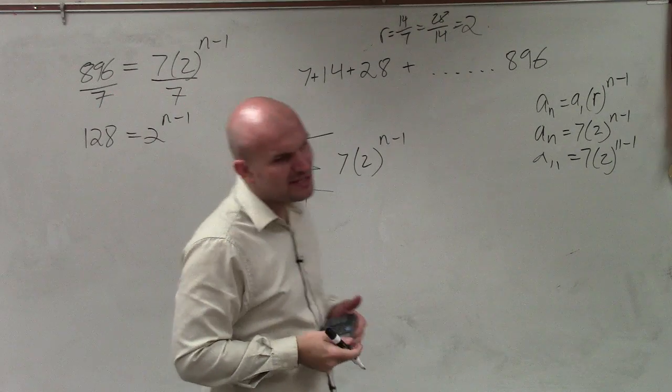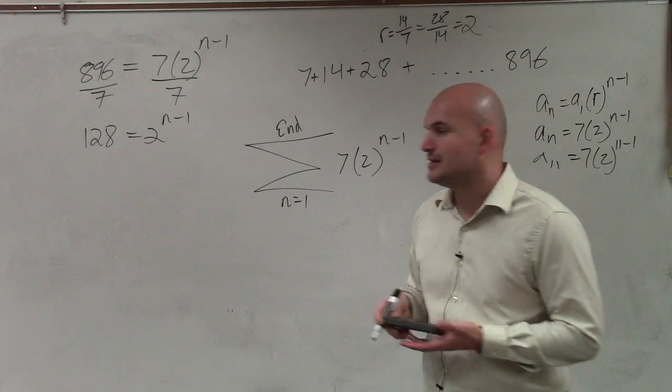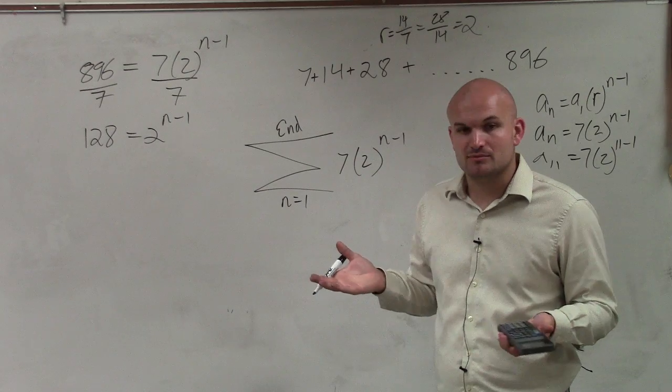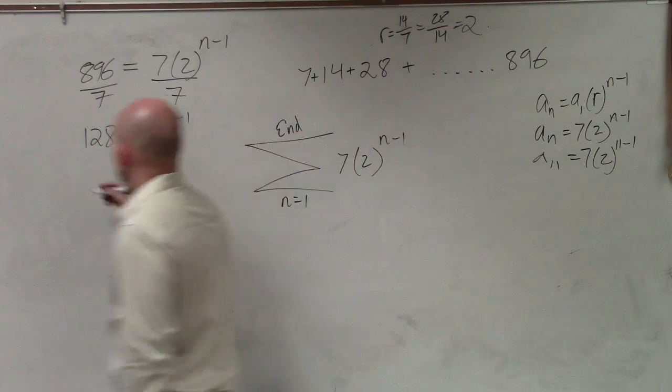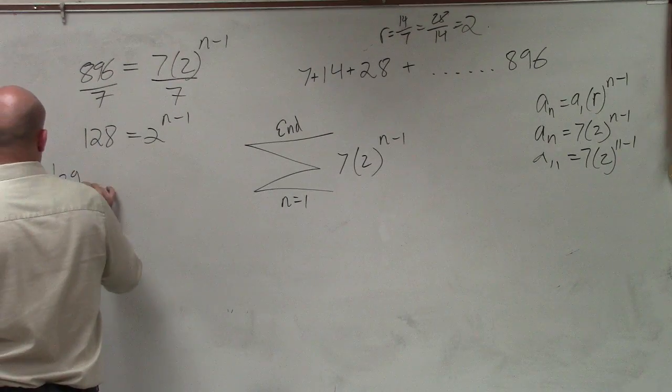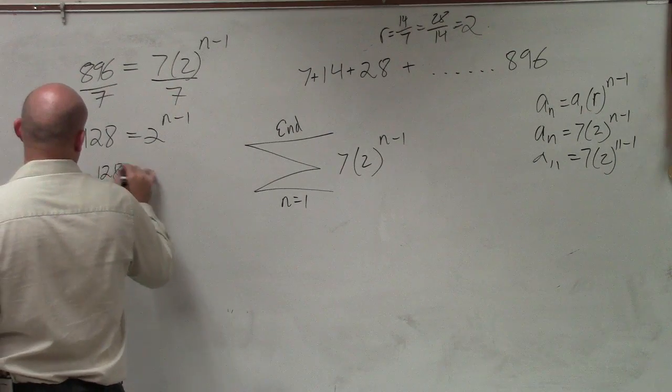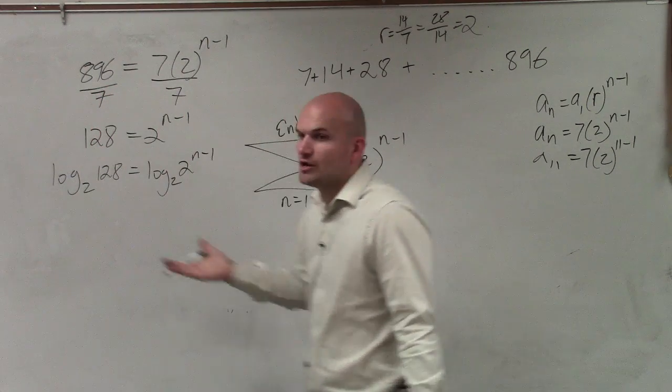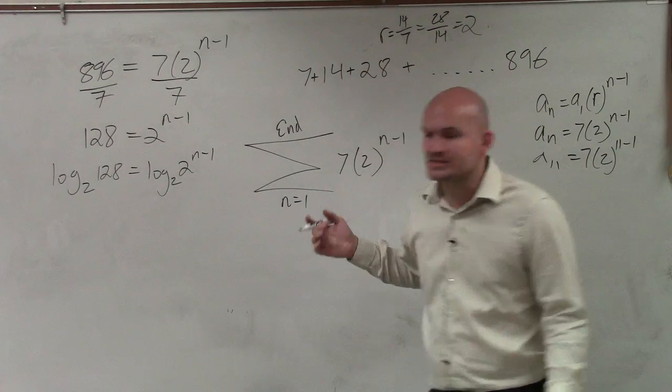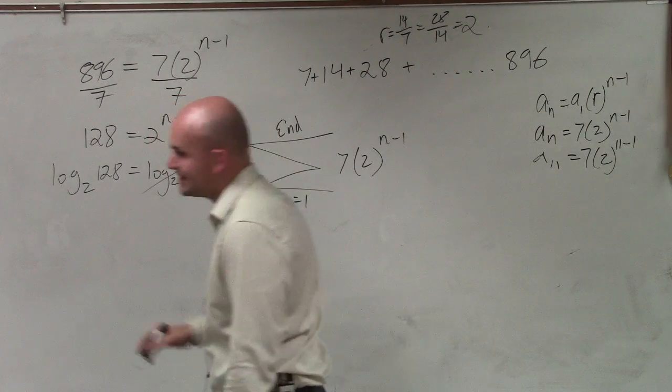Ooh. So now we need to solve for n as it's in an exponent. So there's two options I can do. I can take the log of both sides, right, log base 2 of 128 equals log base 2 of 2 to the n minus 1. Take the log base 2 of both sides. Why? Because the property of the logs takes that out.